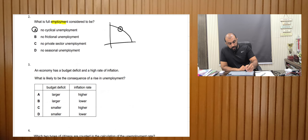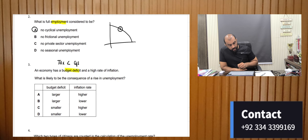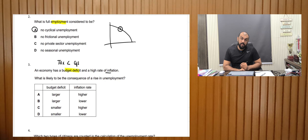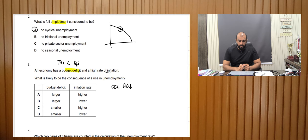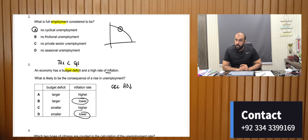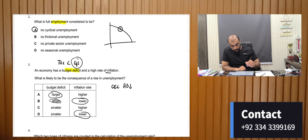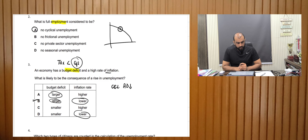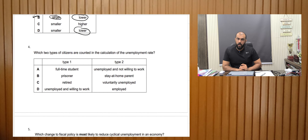An economy has a budget deficit — meaning taxes are less compared to government spending — and a high inflation rate. What is likely to be a consequence of a rise in unemployment? If unemployment rises, people have less money, consumer expenditure decreases, aggregate demand falls, so demand-pull inflation would decrease. For the budget deficit: if people are unemployed, the government must pay more unemployment benefits, increasing government spending, making the deficit larger. The correct answer is B.